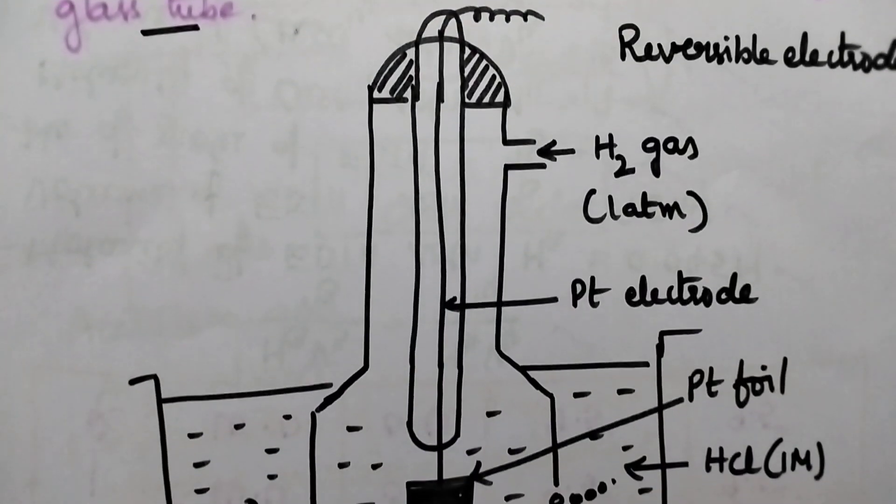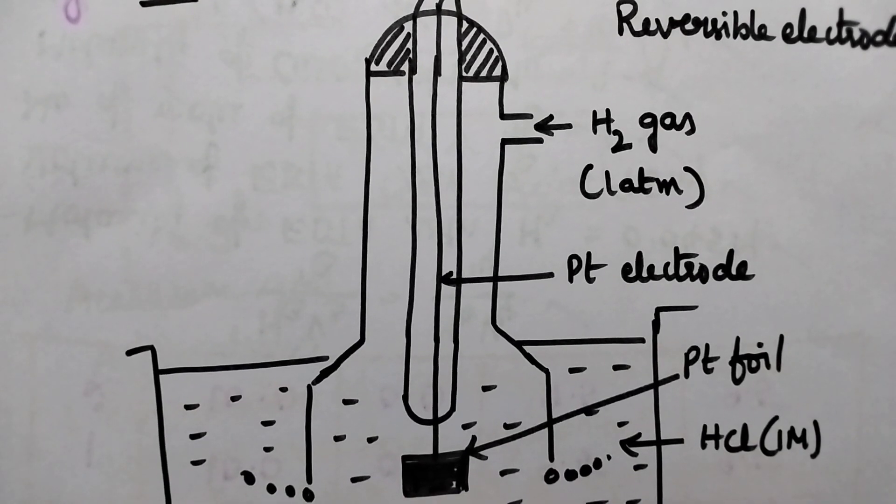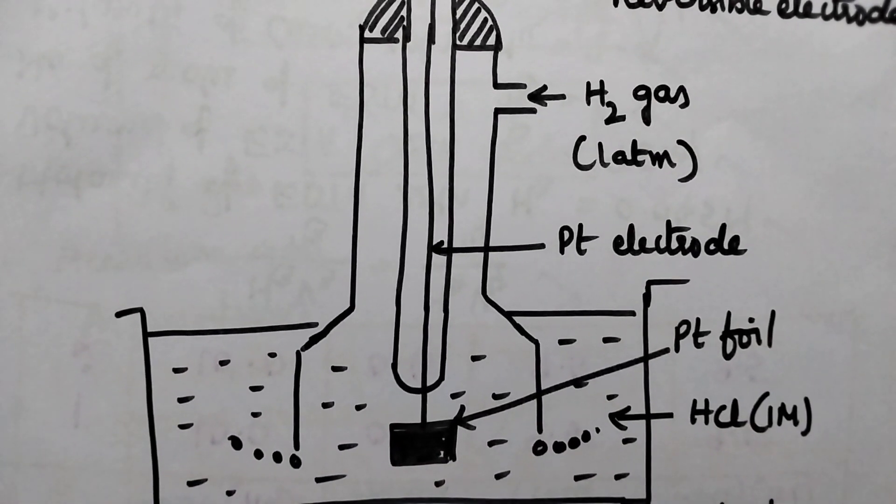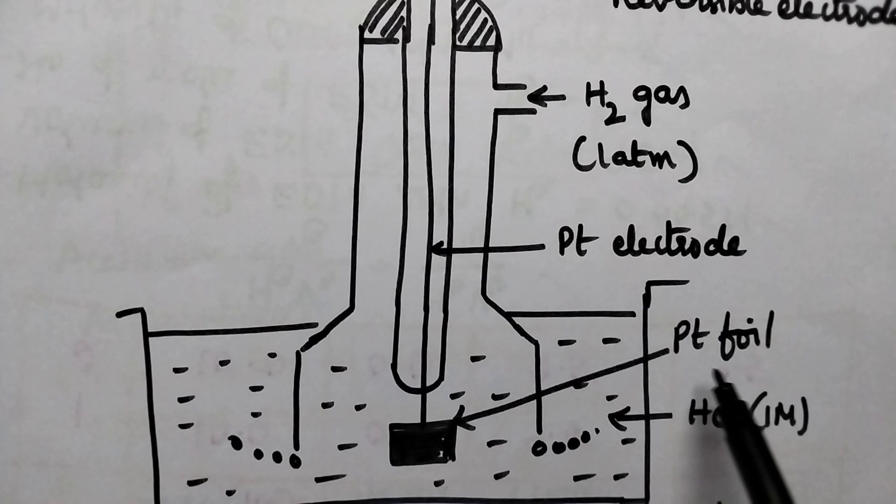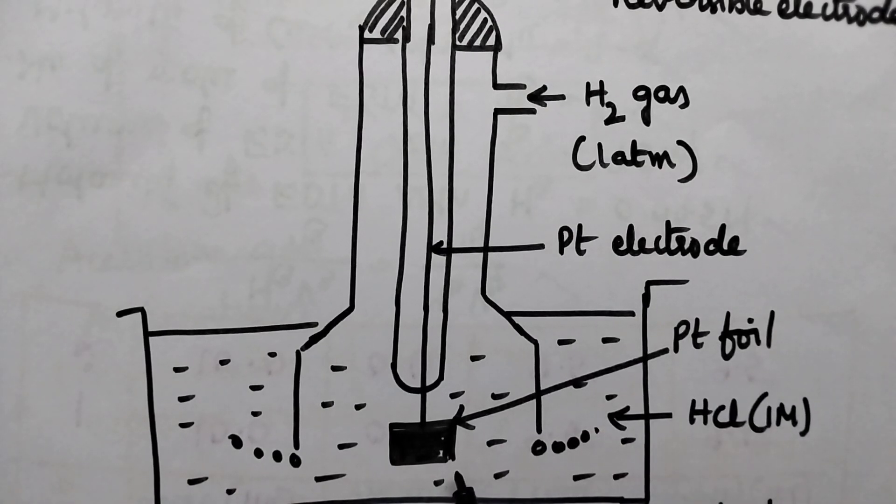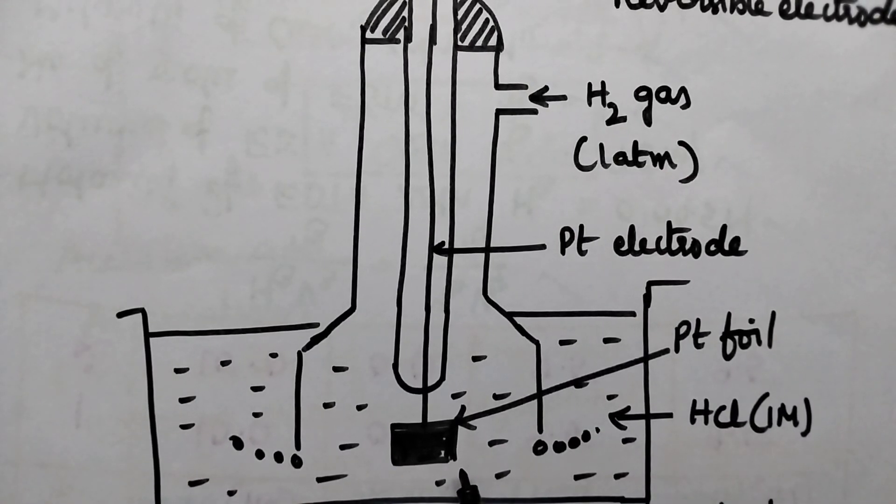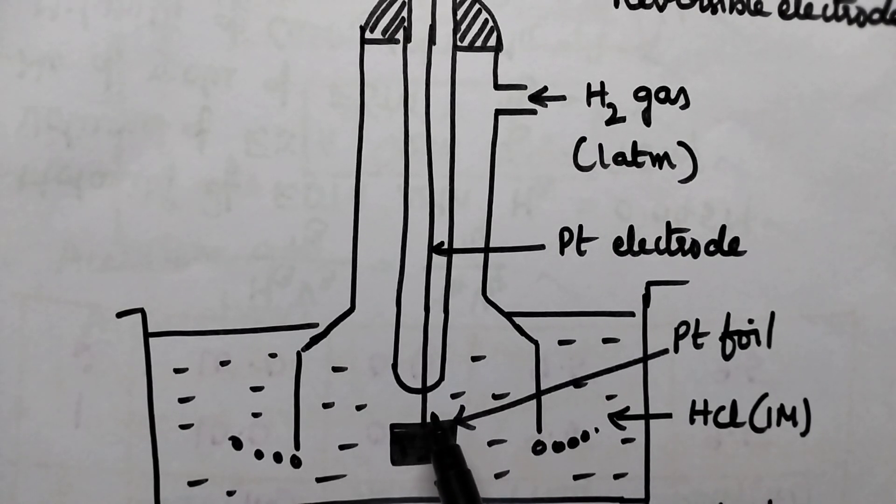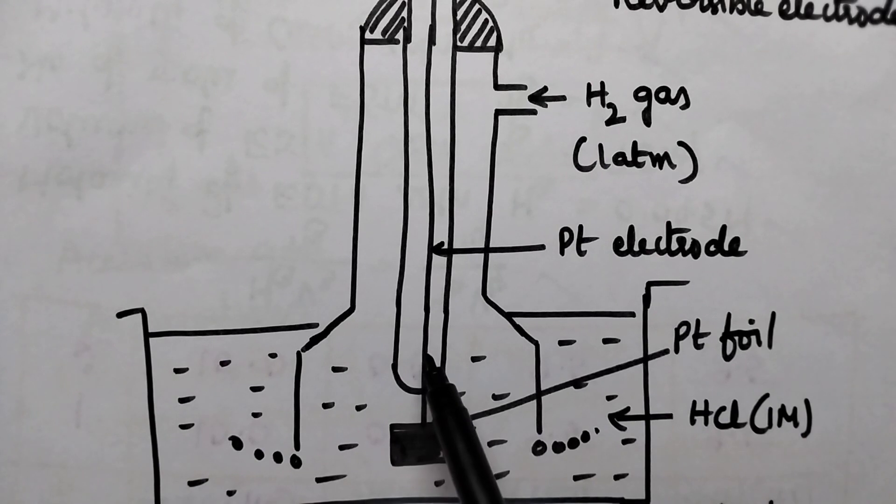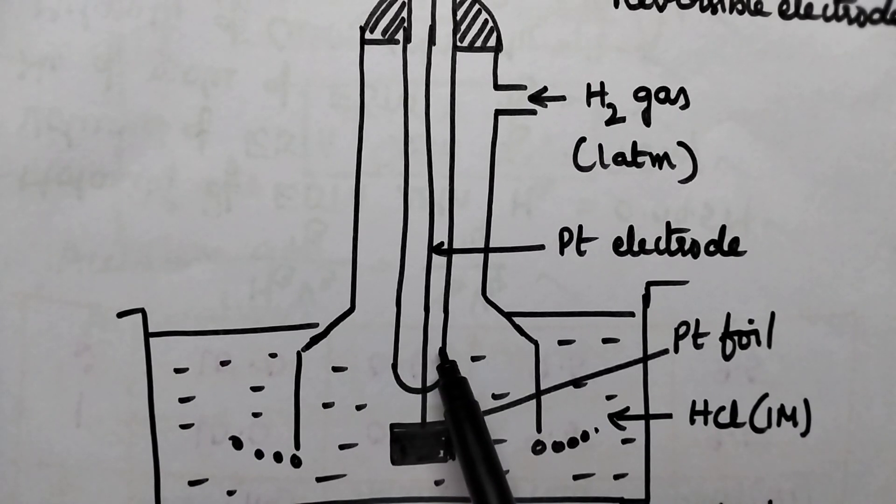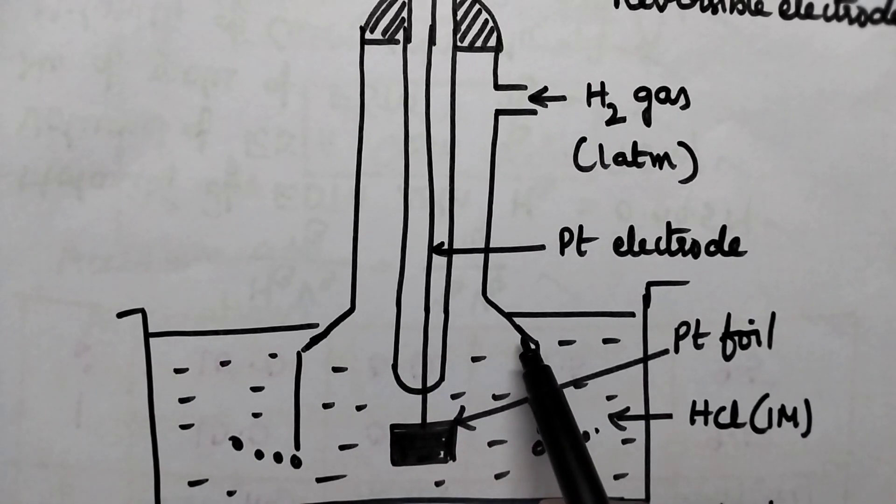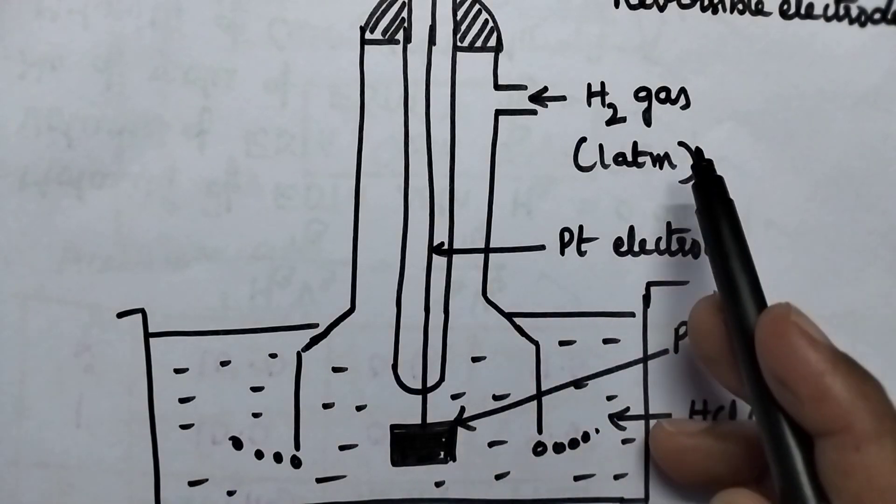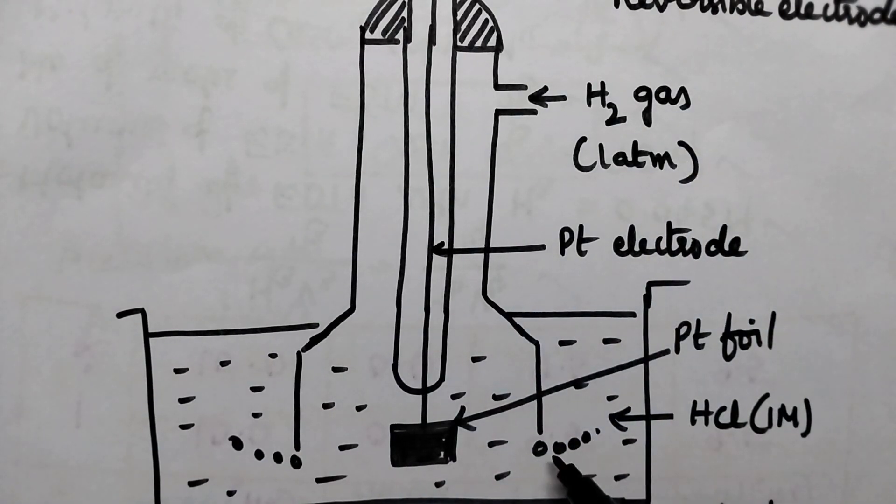Let us see the instrumentation of standard hydrogen electrode. It consists of a small platinum foil which is coated with platinum black to facilitate the absorption of hydrogen gas. It is sealed to a platinum electrode which is sealed in an inner glass tube and placed in an outer glass tube having an inlet at its top and a number of holes at the bottom.